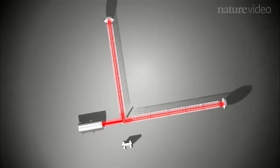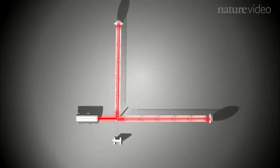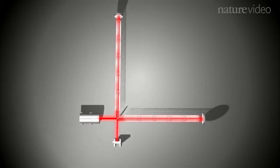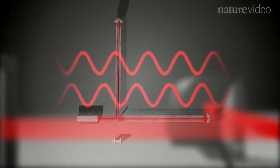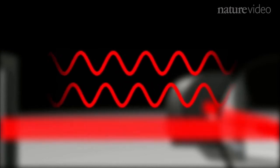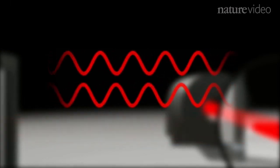But if a gravitational wave passes through, it will minutely distort space-time, changing the distance each laser beam has to travel. That will mean that the waves no longer line up, they won't cancel each other out, and the signal will be detected.